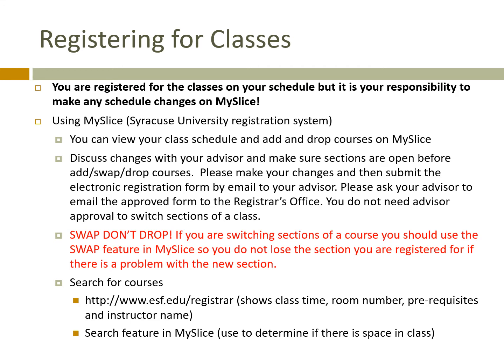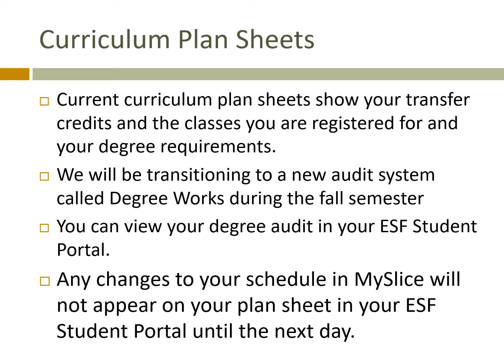You can find what's being offered in terms of class times, room numbers, prerequisites, and instructor names on the ESF Registrar's webpage. Then you go to MySlice to search to see if there's space in the class and actually complete your registration. Your curriculum plan sheet will show you how many transfer credits you've received, what classes they transferred for, and any classes that you are already registered for.